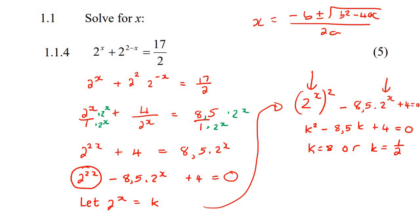Now, that's not the answer. That's just the value of k, but we're trying to find the value of x. So what we do now is we just substitute back into here. So we can say 2 to the x is equal to 8, and then we can go solve that one, and then we can say 2 to the x is equal to 0.5.